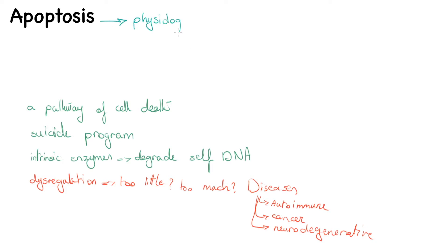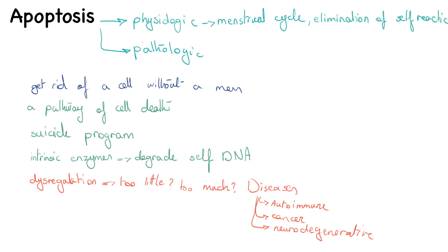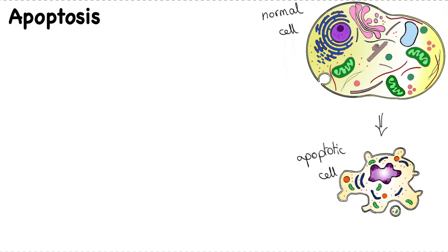Apoptosis occurs both physiologically as part of normal development and throughout adulthood, as well as in certain pathological conditions. It is needed in situations where we must get rid of a faulty cell without provoking a messy host inflammation. Physiological instances include the menstrual cycle and elimination of self-reactive lymphocytes. Pathological instances include removal of mutated cells, cells with damaged DNA, cells with accumulation of misfolded proteins, and atrophy of a damaged organ.